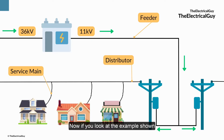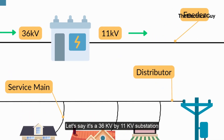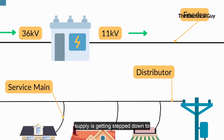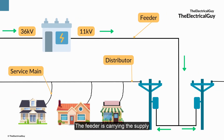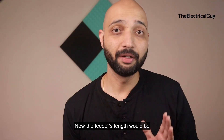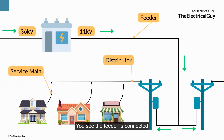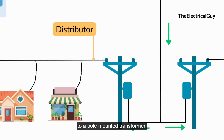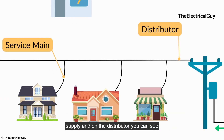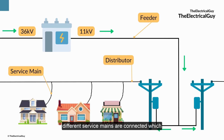Now if you look at the example shown on the screen, we have a substation — let's say it's a 36 kV by 11 kV substation. It is getting 36 kV as incoming and then the supply is getting stepped down to 11 kV. From the substation, the feeder is carrying the supply to the distributor. The feeder's length would be more than the distributor's. You see the feeder is connected to a pole-mounted transformer, from where the distributor is carrying the supply. And on the distributor you can see different service mains are connected, which are powering the different loads.